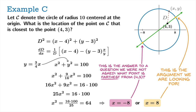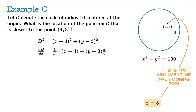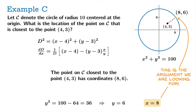Substituting Y equals 3/4 X into the circle equation X squared plus Y squared equals 100, multiplying through by 16, X squared equals 64, so X equals negative 8 or positive 8. From our diagram, X equals negative 8 corresponds to the point farthest from (4, 3) — a bonus answer to a different optimization question. The argument we're looking for is X equals 8. Substituting back into the circle equation gives Y equals 6. The point on C closest to (4, 3) has coordinates (8, 6).